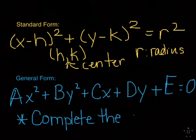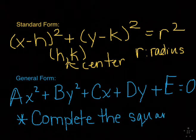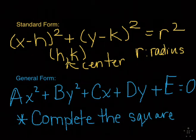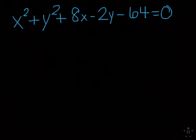You may have seen completing the square back when you did quadratics and other equations, maybe in geometry with circle equations, pre-cal, conics, and so on. Here we go. This is our first one: x² + y² + 8x - 2y - 64 = 0. This is in general form.